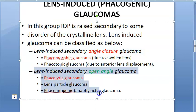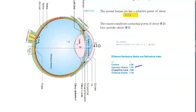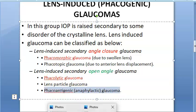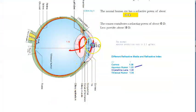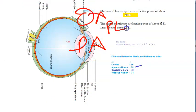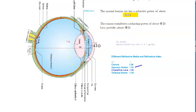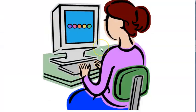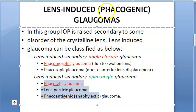We are done with angle-closure glaucoma. In secondary open-angle glaucoma, the angle is open but something is blocking it — clogging the trabecular meshwork. It can be lens particles, or phacoantigenic, due to an antigen-antibody reaction to the lens particles, where that inflammatory material blocks the trabecular meshwork.